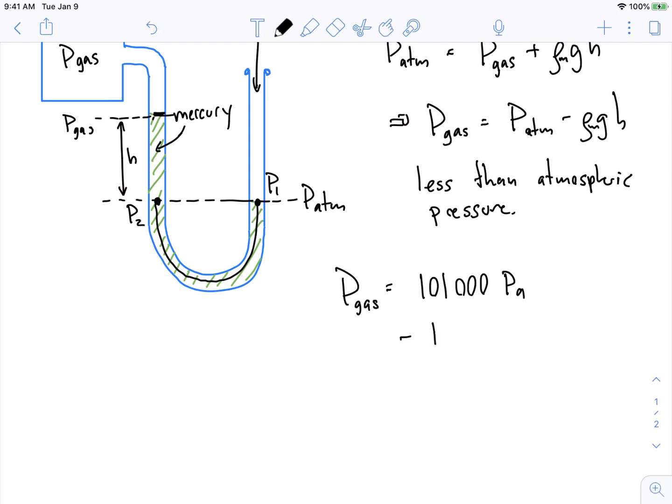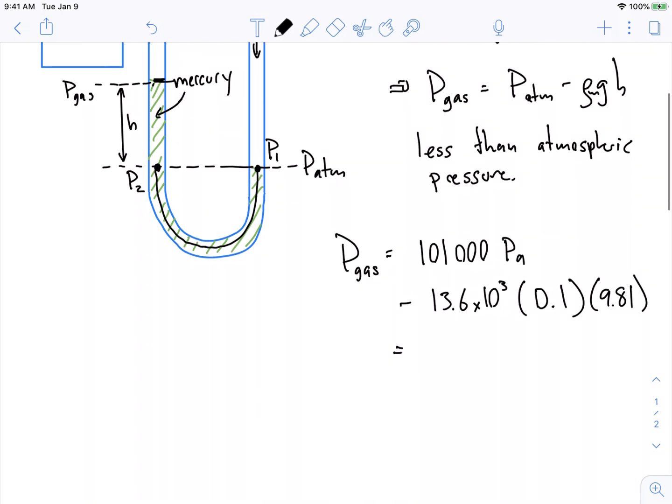Minus the density of mercury, which is given in the problem, times the height, which is 10 centimeters, 0.1 meters, which comes from 16 centimeters minus 10 centimeters, and then times the acceleration due to gravity. And the number I get from that is actually 87.7 kilopascals.